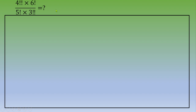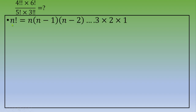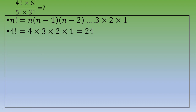Before starting, let's recap what a factorial is. The factorial of a natural number n is: n times (n minus 1) times (n minus 2), all the way down to 3 times 2 times 1. For example, 4 factorial is 4 times 3 times 2 times 1, which equals 24. Notice that 3 times 2 times 1 is also 3 factorial, so 4 factorial can be written as 4 times 3 factorial.